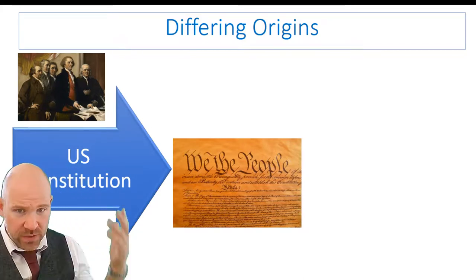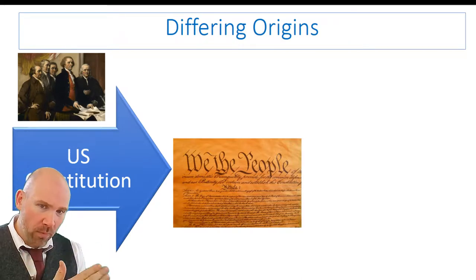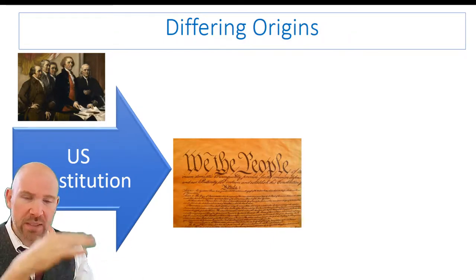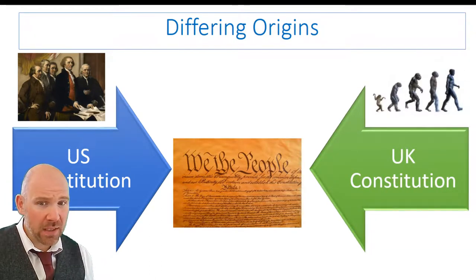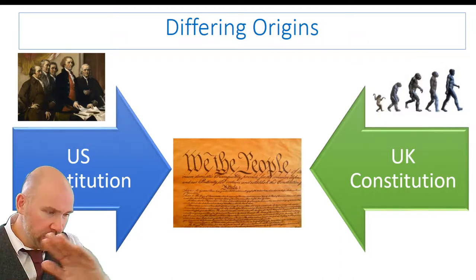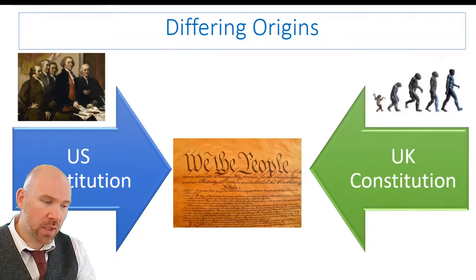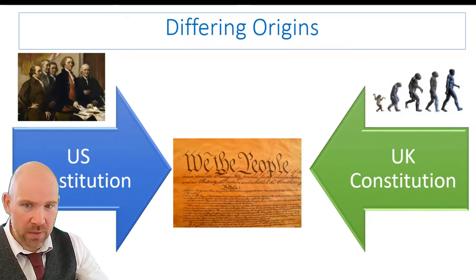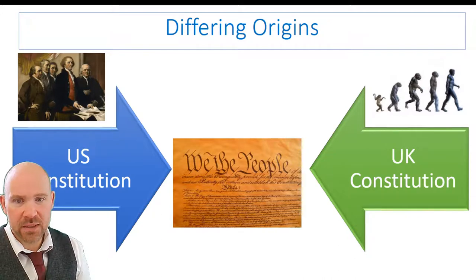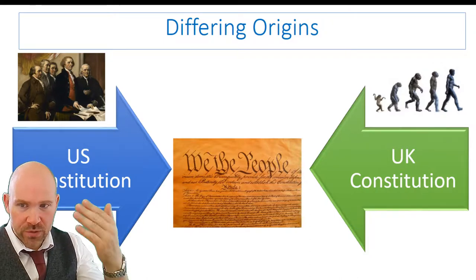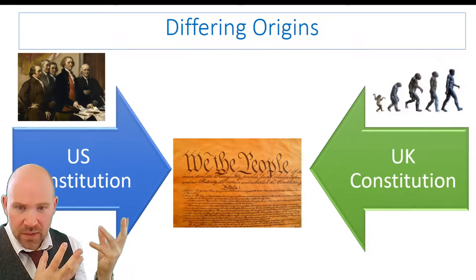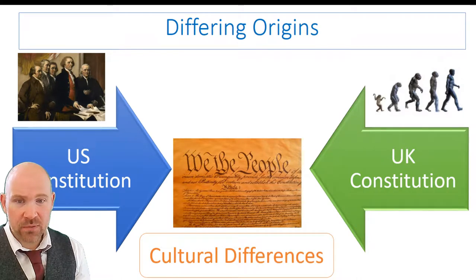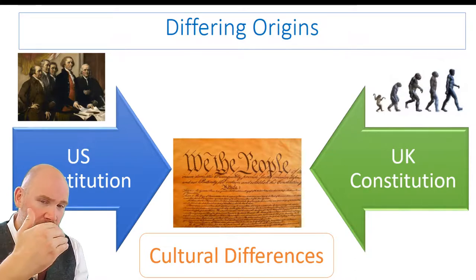Both constitutions come from very different places. The US constitution was made by the Founding Fathers in the 1700s, at one point in time, in a brand new country where a group of people sat down and said we need to make a codified constitution with a two-tier legal system. The UK is the complete opposite — a long slow evolution of small tweaks, going from Magna Carta to the Bill of Rights to the Parliament Acts, right up to Brexit and the Fixed Term Parliaments Act. It's a far slower evolution over time, and a lot of these differences come down to cultural differences.